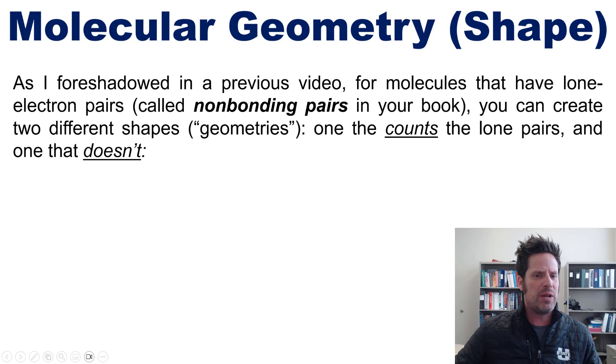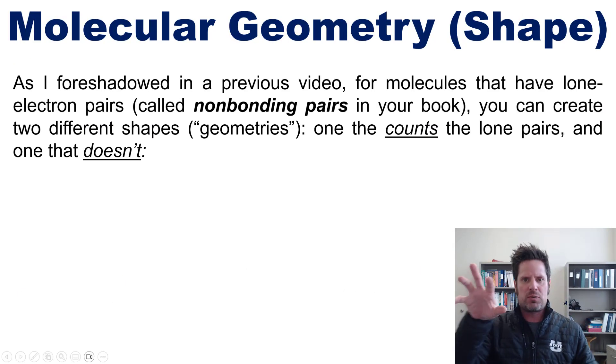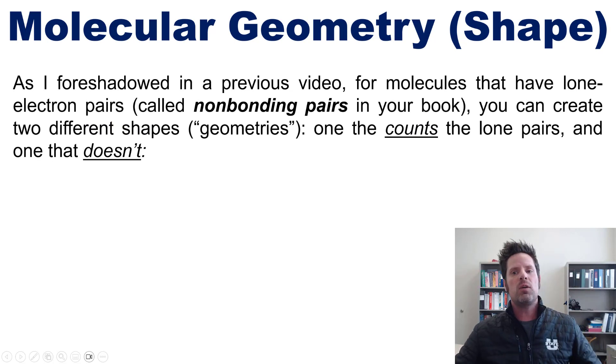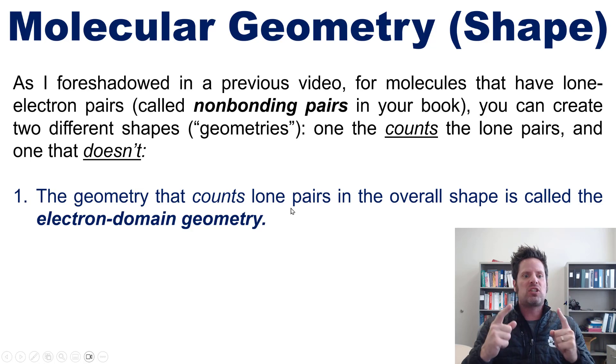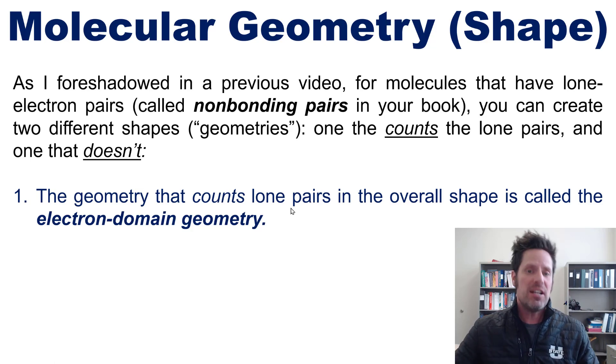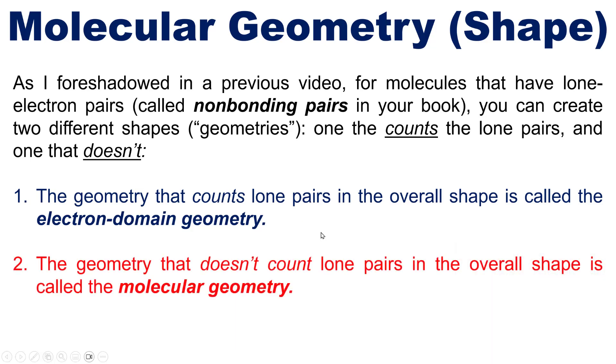Furthermore, as I foreshadowed in an earlier video, for molecules that have lone electron pairs, again called non-bonding pairs in our book, I like to just call them lone pairs, you can create two different shapes or geometries. One that counts the lone pairs and one that does not. So the geometry that counts the lone pairs in the overall shape is called the molecule's electron domain geometry, while the one that does not count the lone pairs is called its molecular geometry.